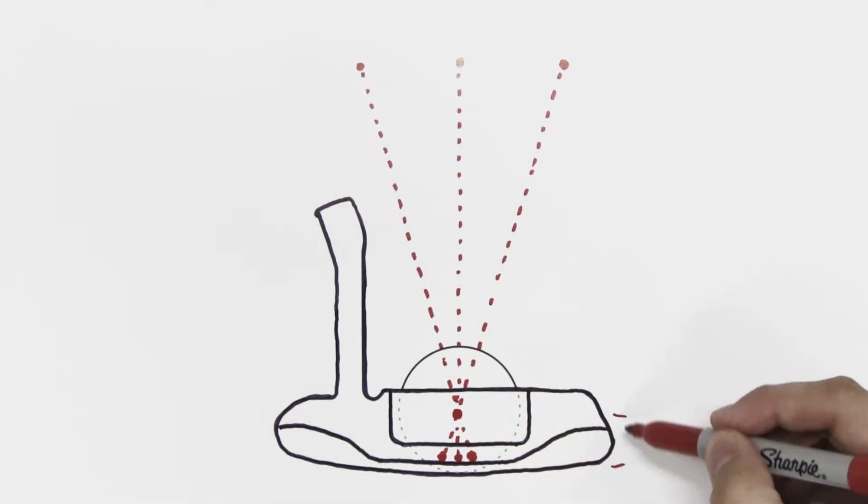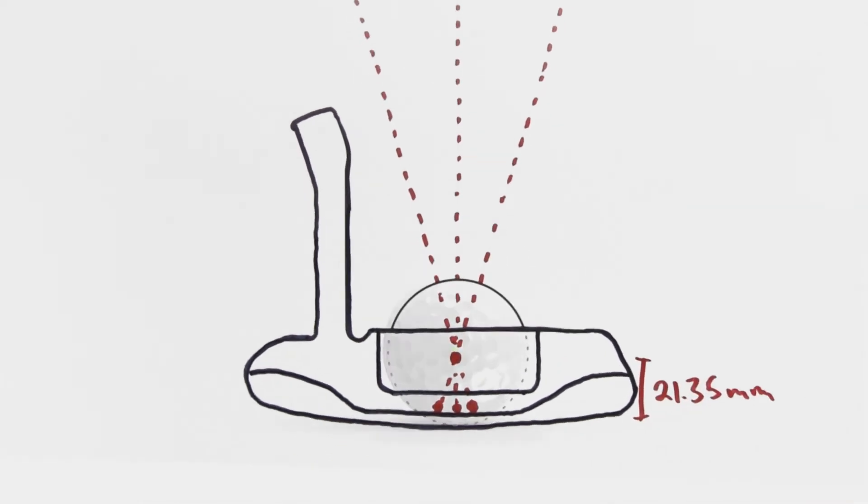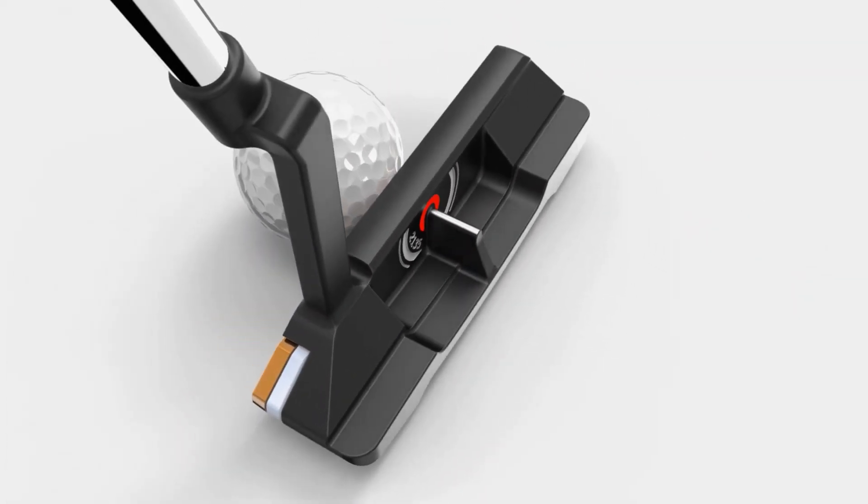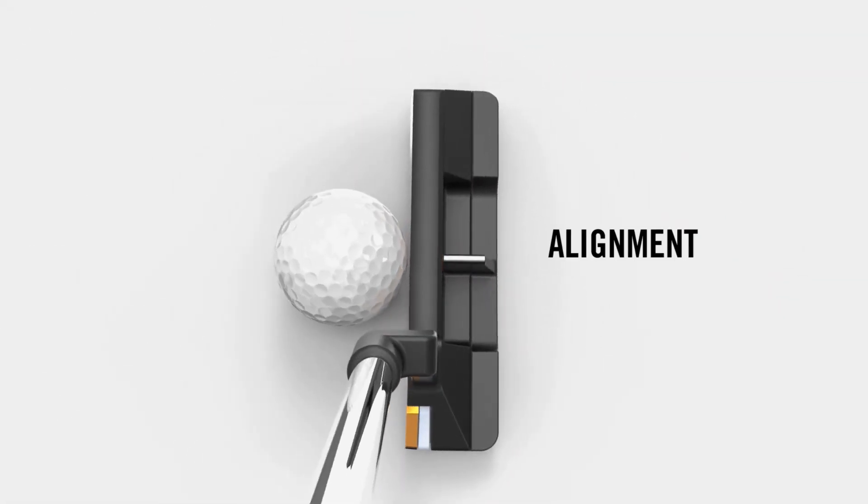This dimension happens to be 21.35 millimeters, the exact radius of a golf ball. That's Cleveland Golf 2135 technology, alignment reinvented.